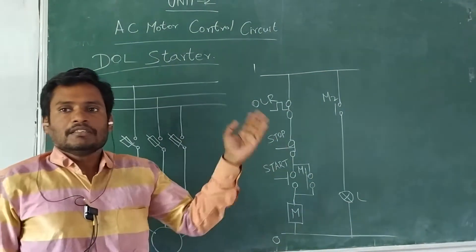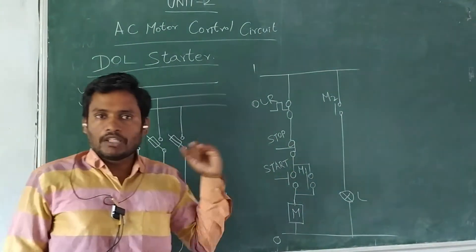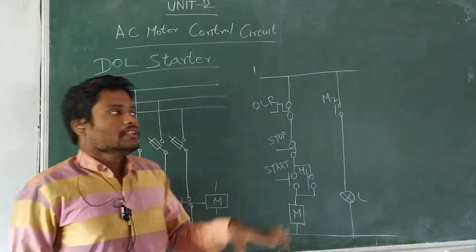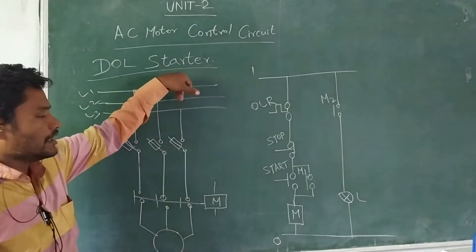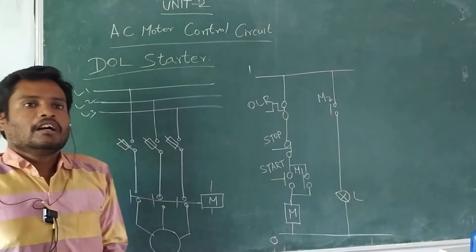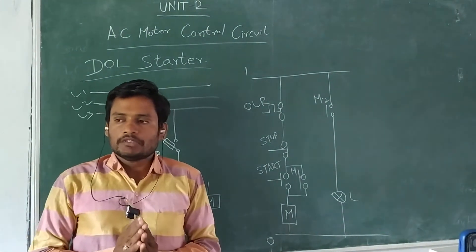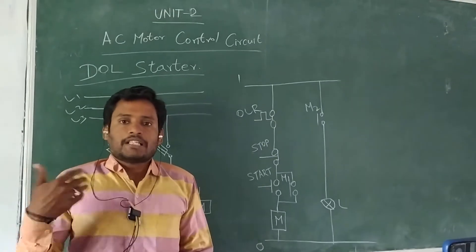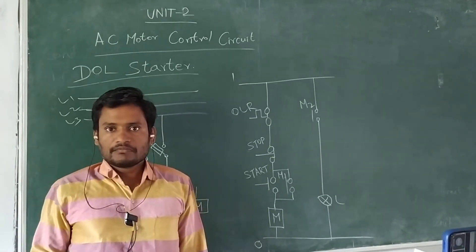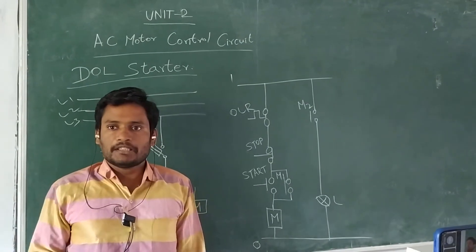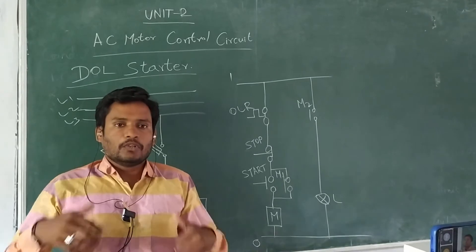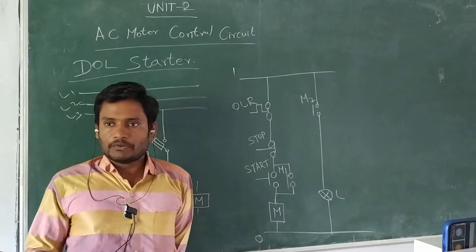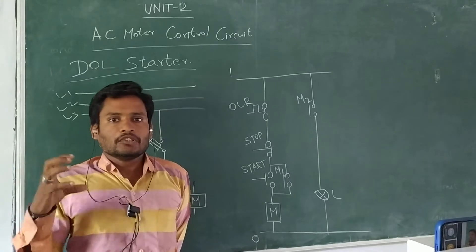If you have the DOL structure, it will be used to start. If you start the motor, the motor rating is 7 times per hour. So once the motor works, it may get damaged.